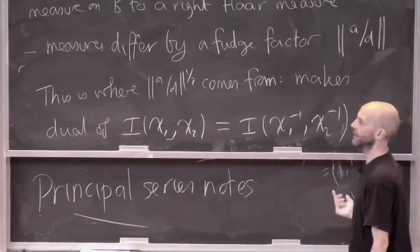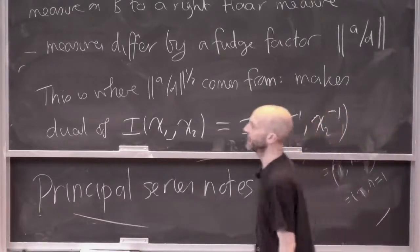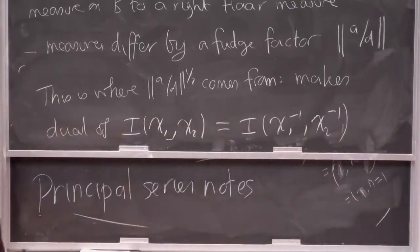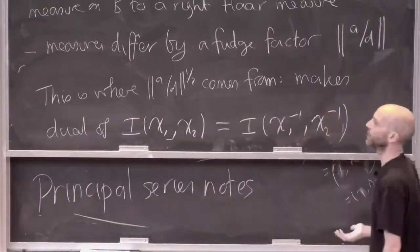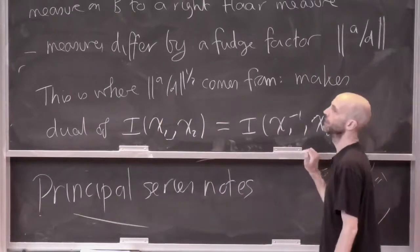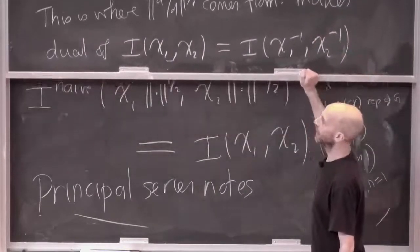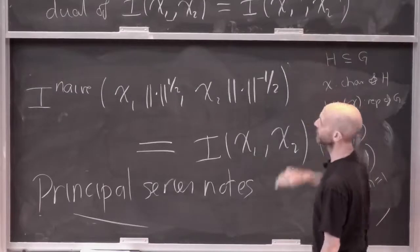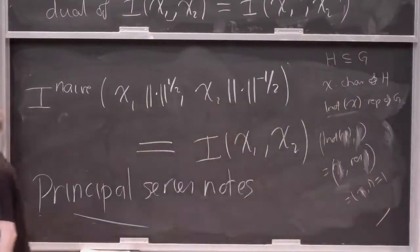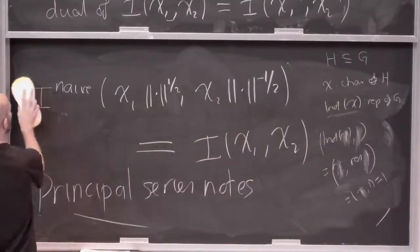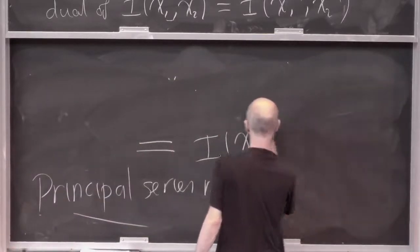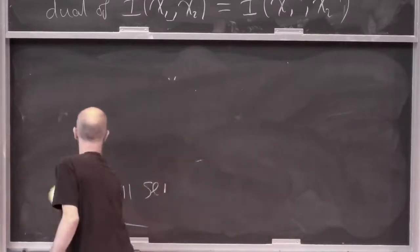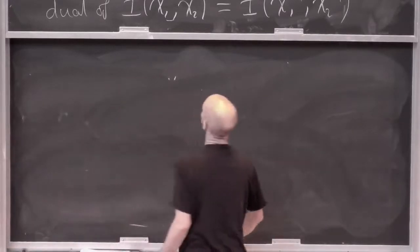So you end up with a fudge factor here to make the pairing work, and you realise the thing to do — if you did this with the naive ones, you'd have this stupid fudge factor, and you decide to fix it by sharing it equally between the two representations, so you end up with a square root on each side. This explains where the fudge factor comes from. It makes the dual of I(χ₁, χ₂) equal to I(χ₁⁻¹, χ₂⁻¹).